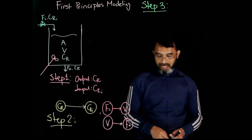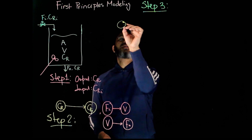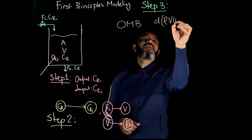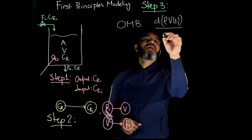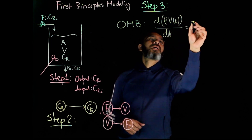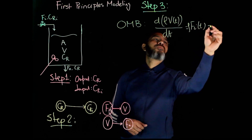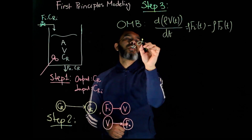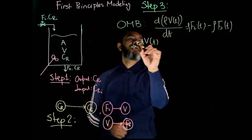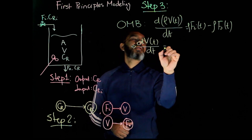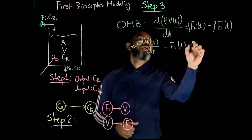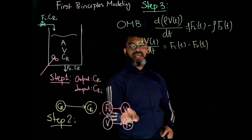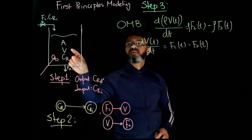Going back to step three, let's look at the overall mass balance first. We'll have d(rho·V)/dt equals Fi(t)·rho minus rho·F-naught(t), which gives us dV/dt equals Fi(t) minus F-naught(t).